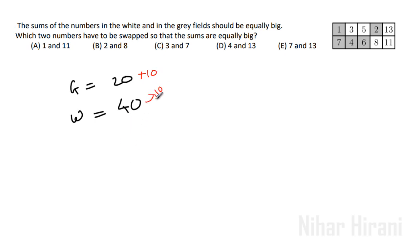So they both become equal. 40 plus 20 is 60, and half of 60 is 30. So we can make both 30 in order to make them equal.